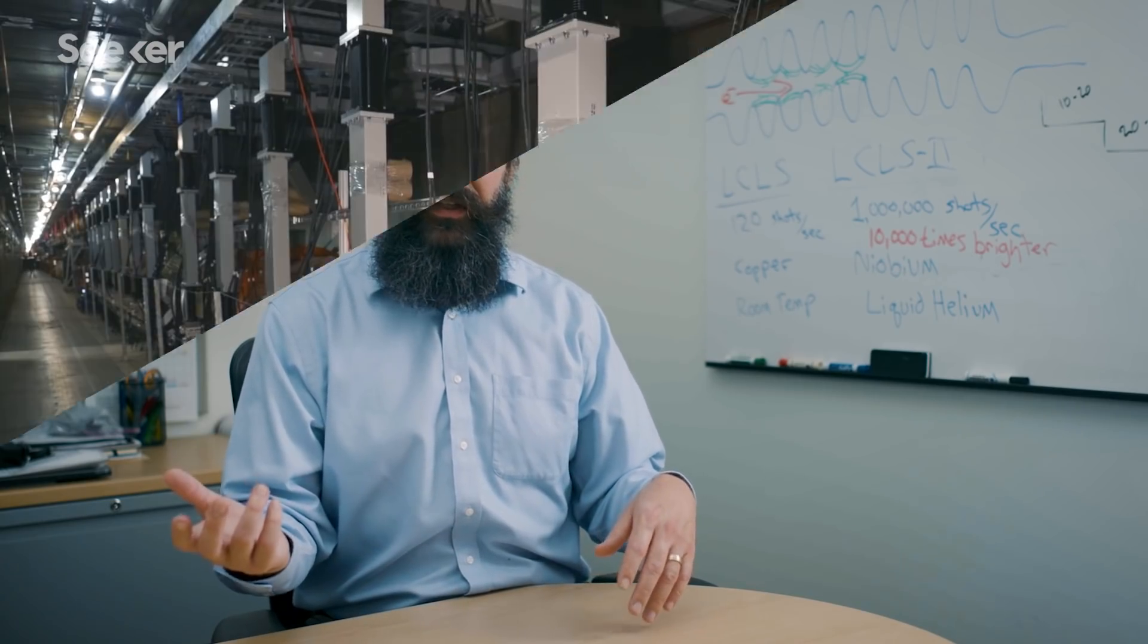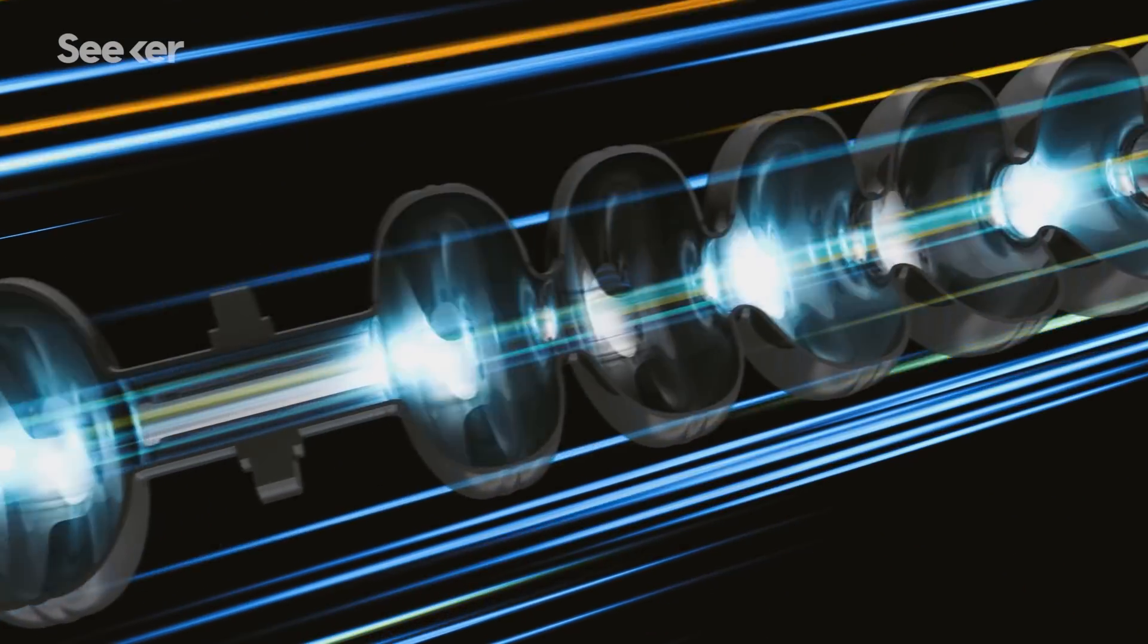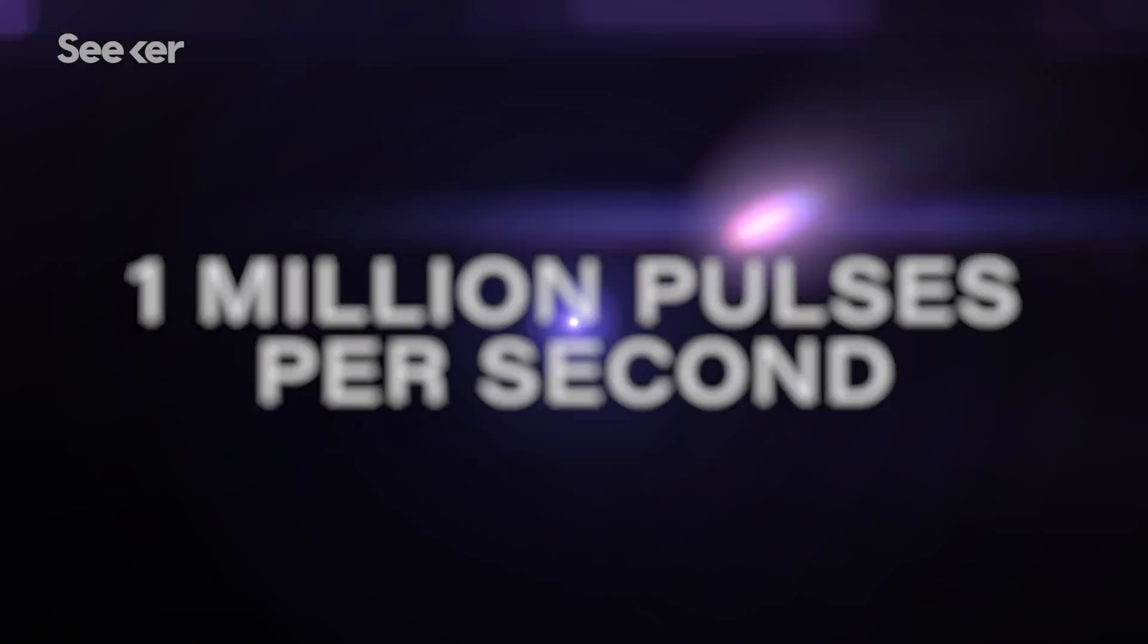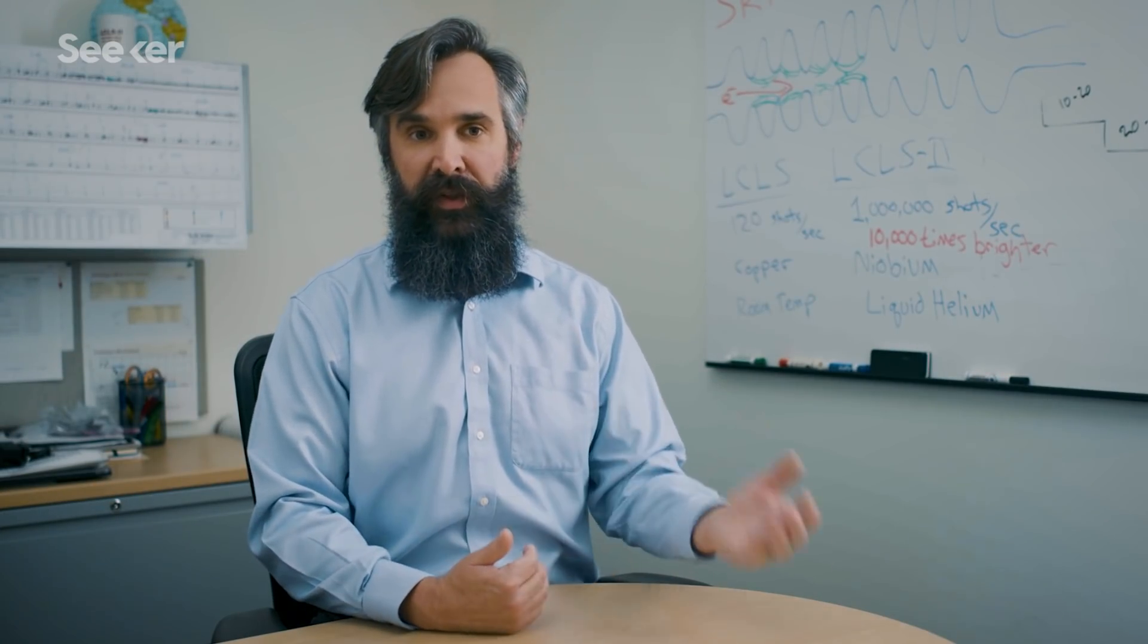The LCLS 2 accelerator is a superconducting accelerator designed to produce a very intense burst of X-rays at a very high repetition rate. We're talking about magnitudes far greater than its predecessor. This new accelerator will go from 120 pulses per second up to 1 million pulses per second, which means more shots per second allows you to collect more information in a shorter period of time, which helps boost science output.